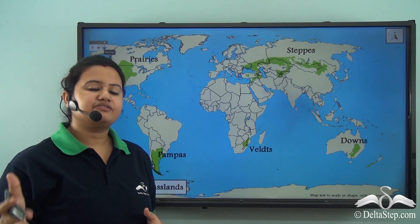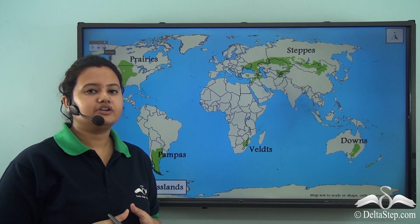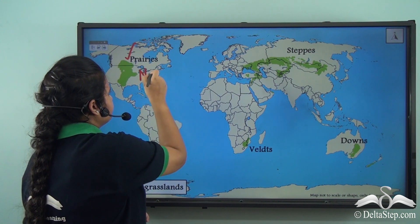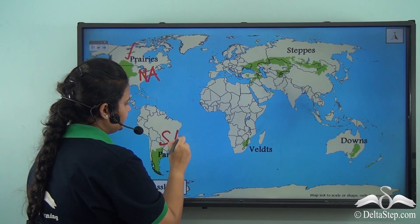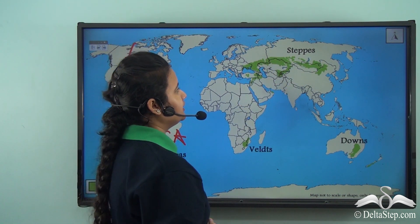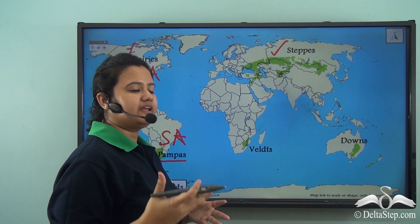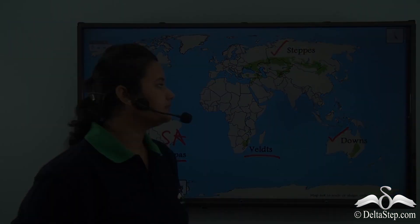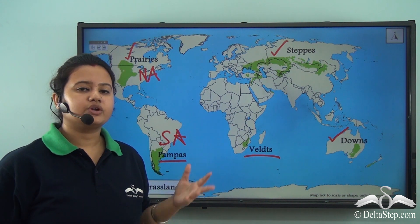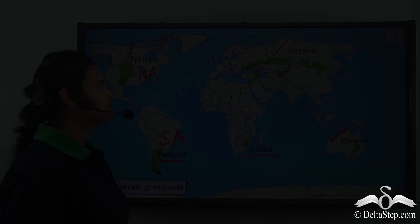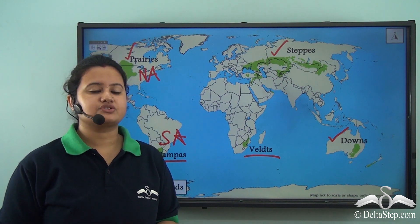Temperate grasslands have special names in different continents. They are known as prairies in North America, pampas in South America, steppes in Europe and Asia (Eurasia), veld in the southern part of Africa, and downs in the southeastern parts of Australia.